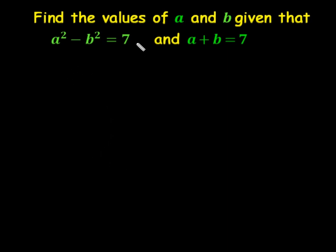We shall start by letting a squared minus b squared be equation star 1, and a plus b equals 7 be equation star 2. Now, a squared minus b squared is the difference of two squares, and we shall treat it as a plus b into a minus b, and we are saying that is equal to 7.